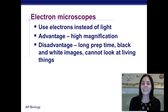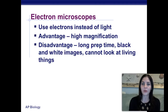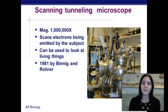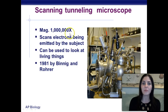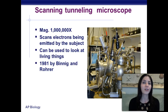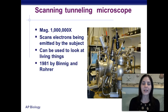The disadvantage of electron microscopes is that they take a really long time to prep. They produce black and white images, so you can't look at anything in color. And since they take such a long time to prep, you also can't look at living organisms. This is a scanning tunneling microscope — it can magnify objects up to a million times. It scans electrons being emitted by the subject, so it can be used to look at living things. This was invented in 1981, the year I was born, by Binnig and Royer.